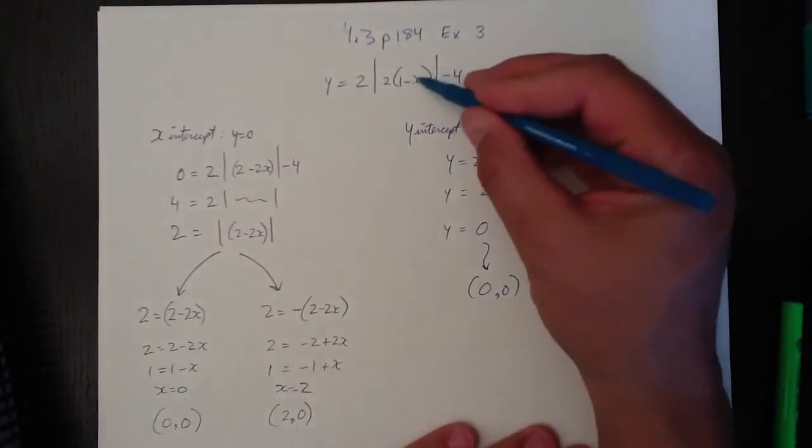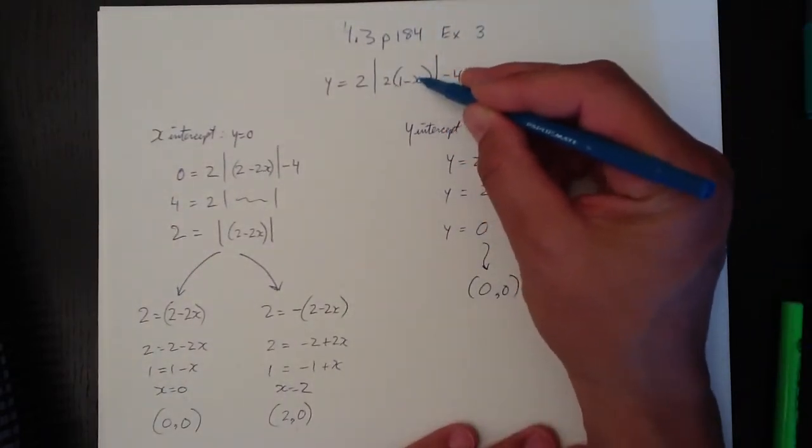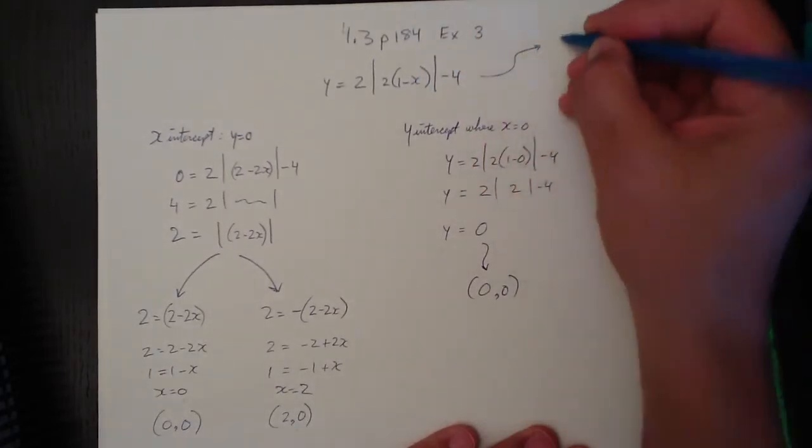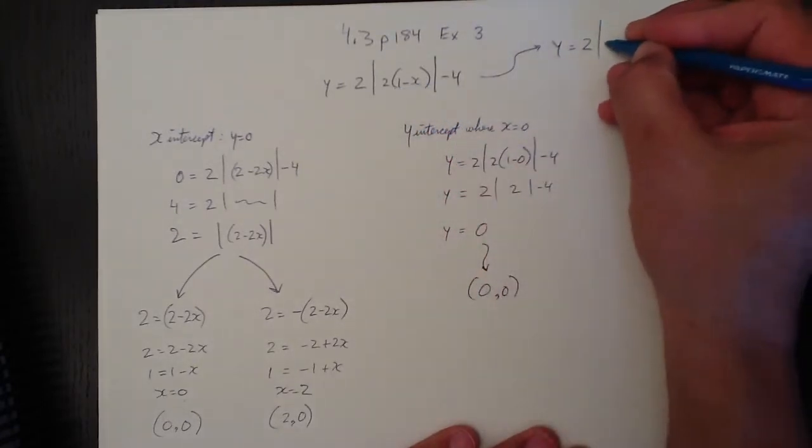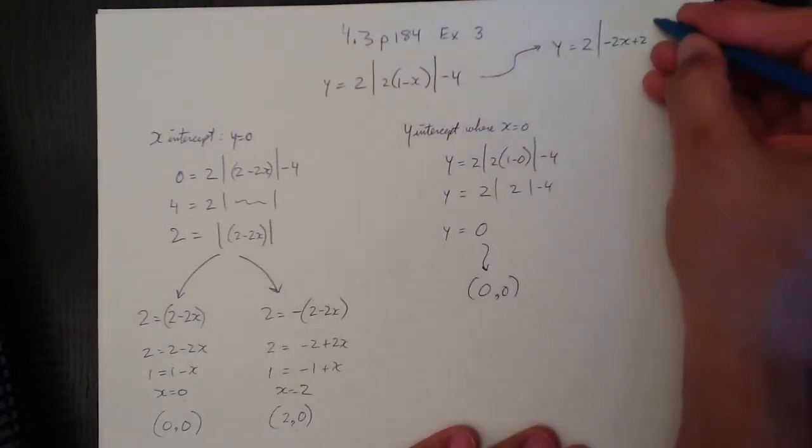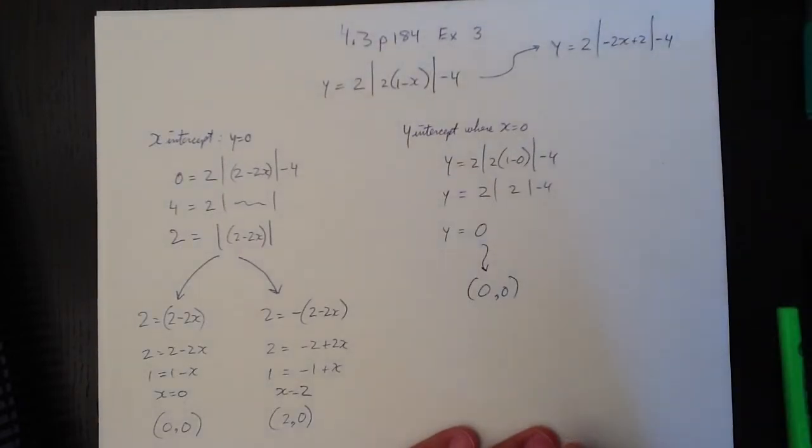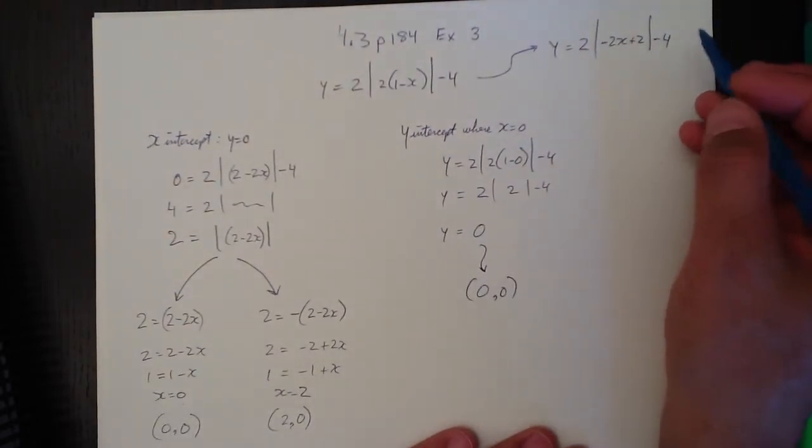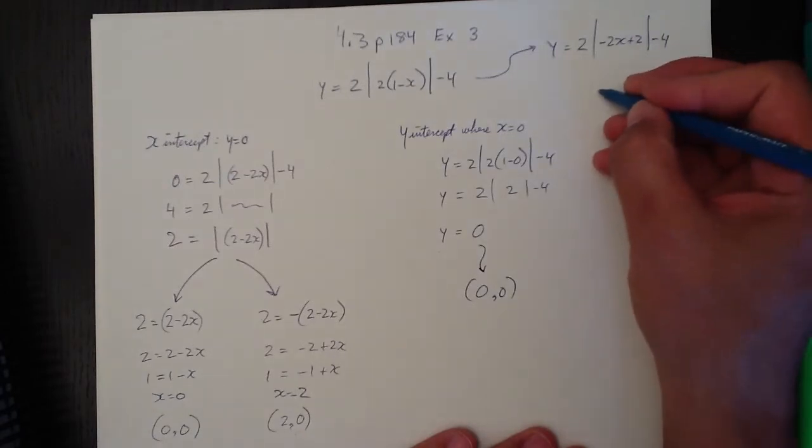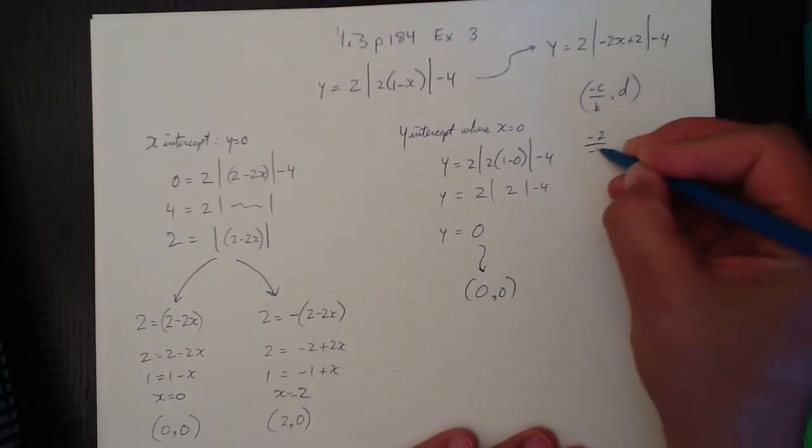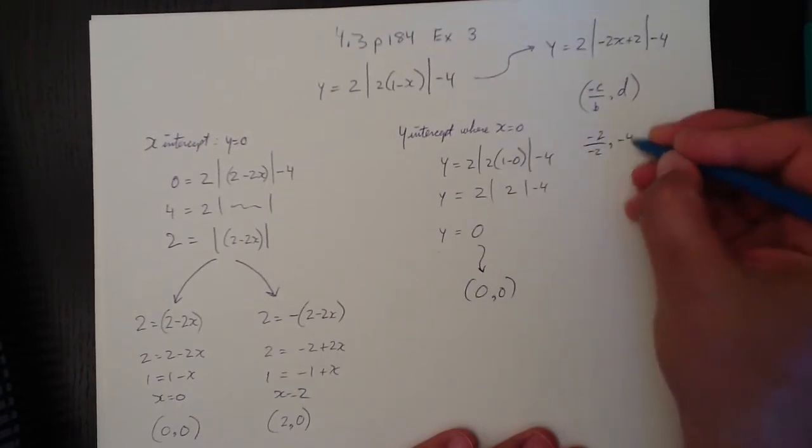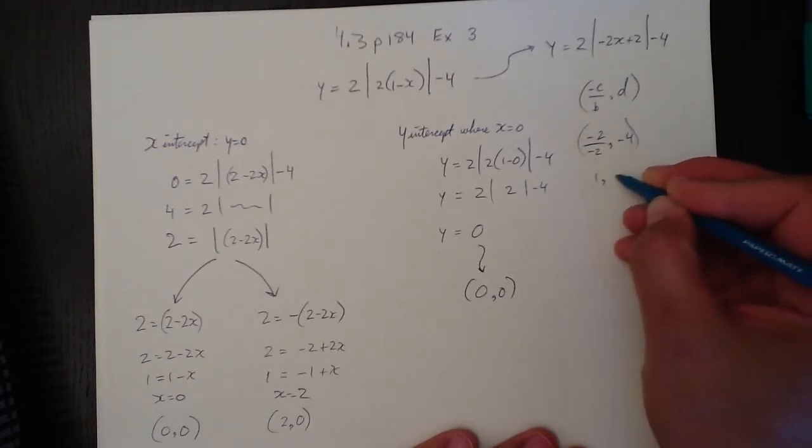In order to calculate the vertex, let's just simplify this here so it looks in the right shape. And to find the vertex, we'll go y equals 2 times the absolute value, that's 2 minus 2x. So I'm going to go minus 2x plus 2, which is the same thing, different order, but that's the shape we like to see. And that gives us the vertex of negative c over b comma d, which gives us negative 2 over negative 2 comma negative 4, also known as 1, negative 4.